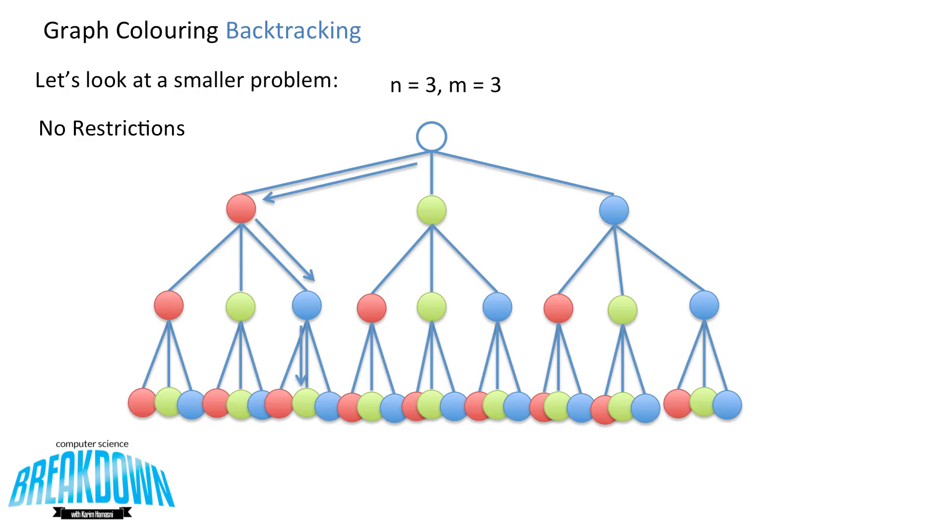So this tree itself has n to the m possible ways to cover the three nodes, so that's 3 cubed which is equal to 27.